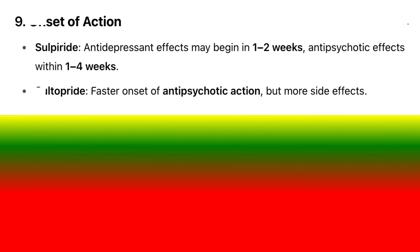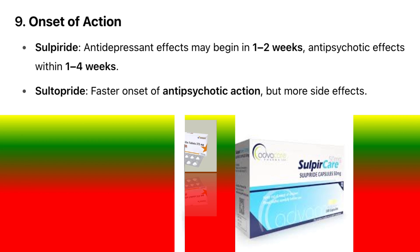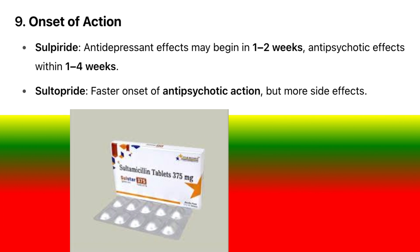9. Onset of action: Sulpiride's antidepressant effects may begin in 1–2 weeks, with antipsychotic effects within 1–4 weeks. Sultopride has a faster onset of antipsychotic action, but with more side effects.